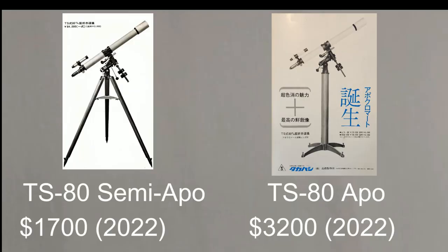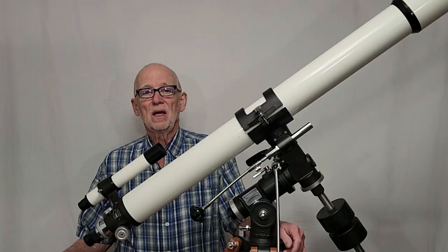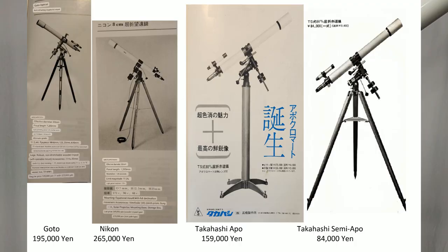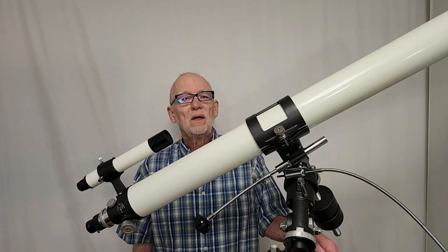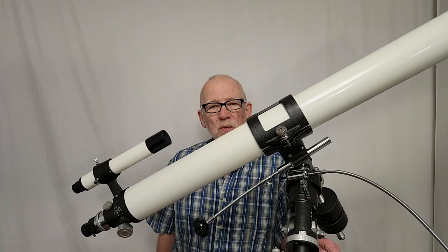The TS-80 apo cost about twice as much as the TS-80 semi-apo. If I had been shopping in those days for a telescope, I'm not sure if I would have been willing to spend the extra money. Both of those were considerably less expensive than comparable Nikon or Goto Kogaku.